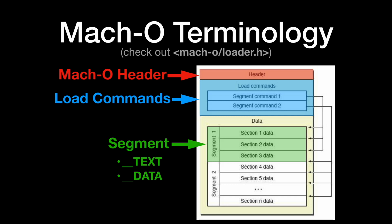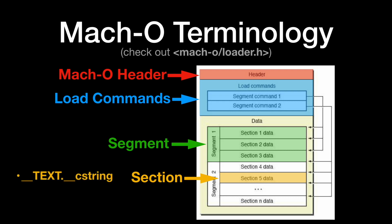There's also the data segment, which stores readable and writable memory — your global variables or things you can change when your program is in memory. Within each segment there are zero or more sections. Sections have a very specific defined purpose. One particular section stores hard-coded UTF-8 strings in your app — so anything like print statements, NSLog, or hard-coded HTTP strings will very likely go into this section. The __text section is the actual location where your code is stored, inside the text segment.